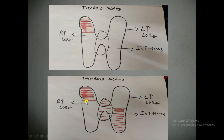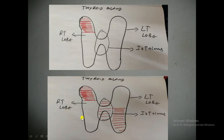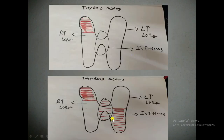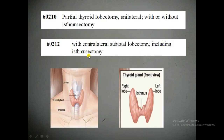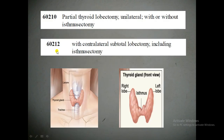For CPT 60212, the physician gives anesthesia, makes a three-to-five-inch horizontal incision in the neck using a scalpel, and separates the skin into upper and lower flaps. The physician checks the nerves and arteries for blood circulation, then removes a part of one lobe. Additionally, the physician removes the contralateral lobe — the opposite side — performing a subtotal lobectomy, meaning half or the maximum portion of the opposite lobe is removed. The isthmus is also removed, including isthmectomy.